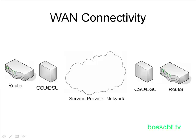The CSU-DSU — channel service unit, data service unit — is where your leased line from the telco plugs in. The leased line plugs into the CSU-DSU, and the CSU-DSU would then be plugged into the router. That's the way it used to be. These days, the CSU-DSU more commonly is built into the router — specifically, it's built into a card on the router, and that's usually a serial line card.